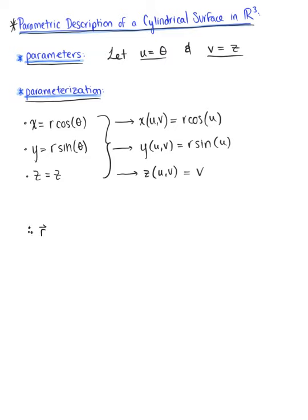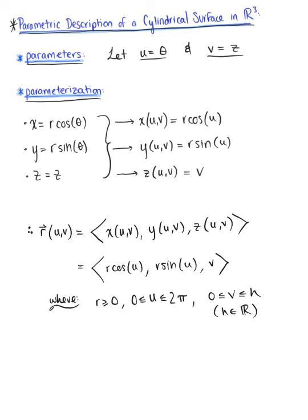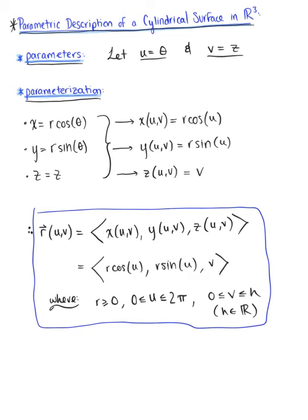Therefore, our vector-valued function in terms of the parameters u and v has three components: x(u,v), y(u,v), z(u,v). Plugging in what we just found, the two-parameter description of a cylindrical surface in three dimensions is r cosine of u, r sine of u, v. This is still where the radius r is greater than or equal to zero, u is greater than or equal to zero and less than or equal to 2 pi, and v is greater than or equal to zero and less than or equal to h, where h is some scalar constant. This is our two-parameter description for a cylindrical surface in R3.